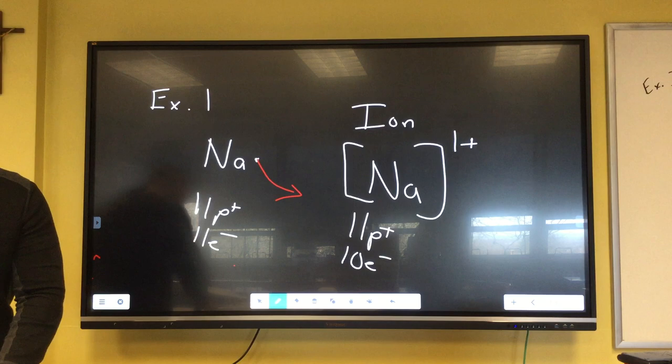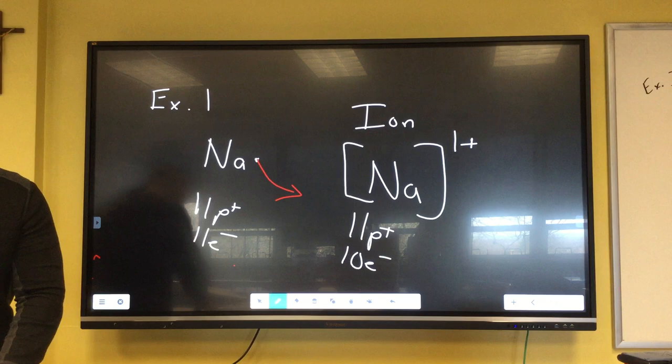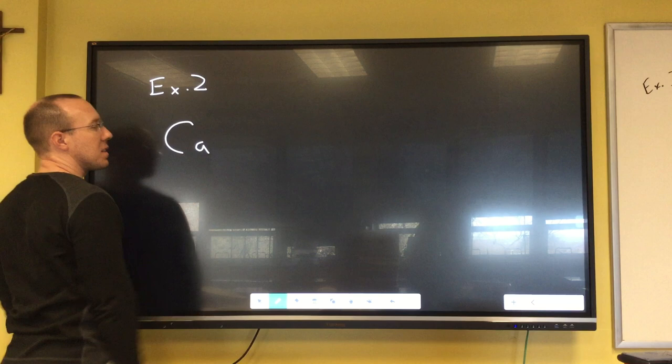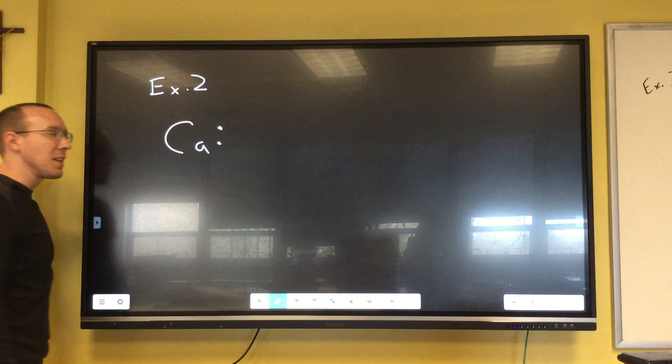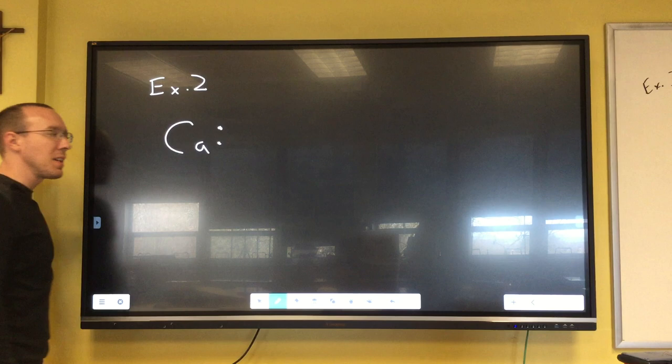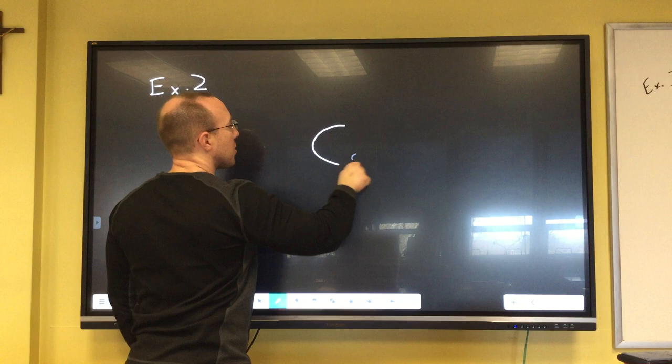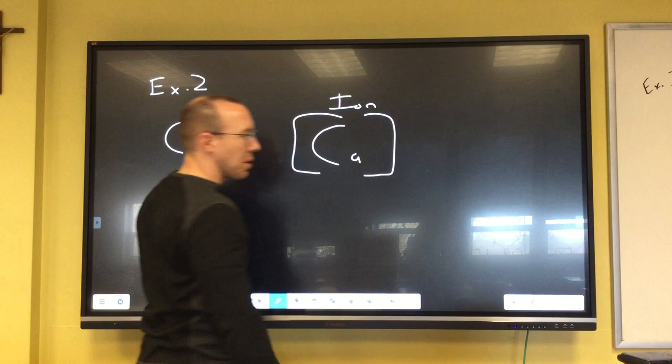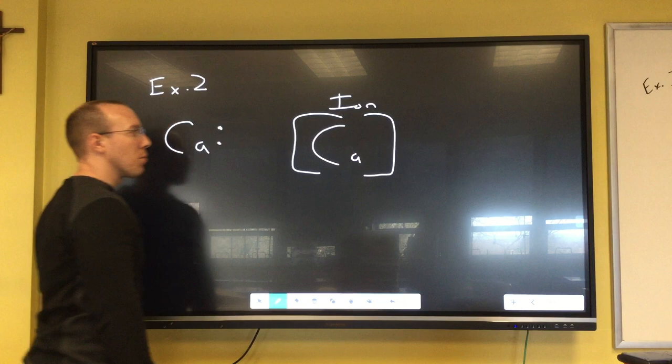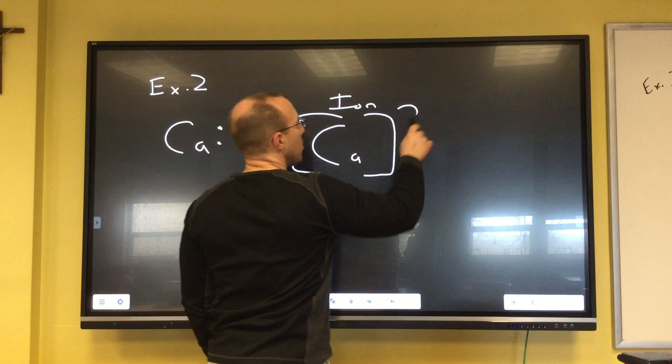Let's do our second example: calcium. Calcium is in the second column, so it has two valence electrons. Is it easier to lose two or to gain six? It's easier to lose two. I like to put ion just to make sure we know it's an ion. We're always going to put these brackets around the ion - it's just the conventional way that we do things. It's going to have two less negative charges now.